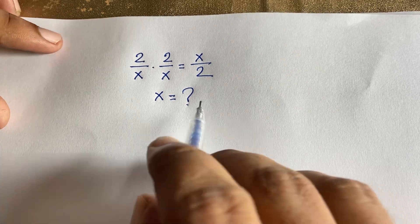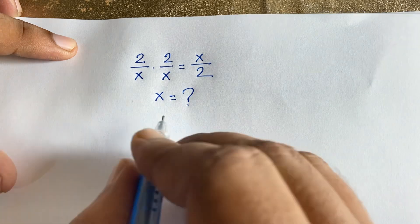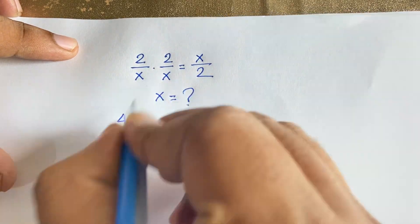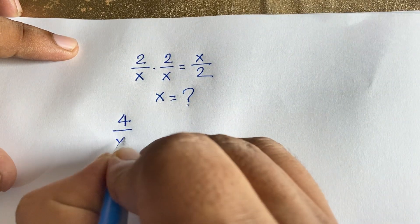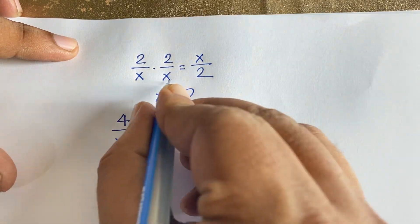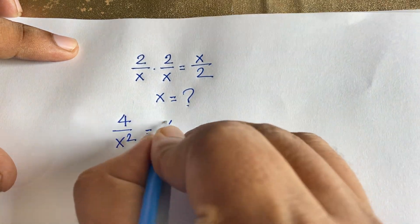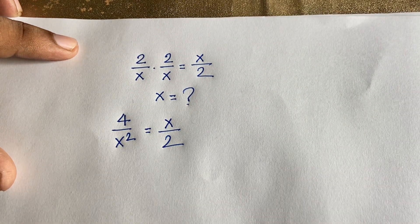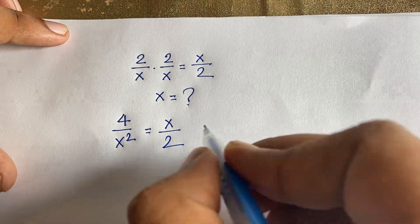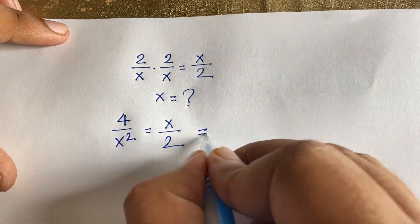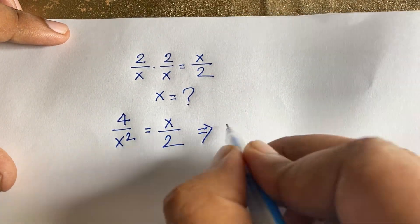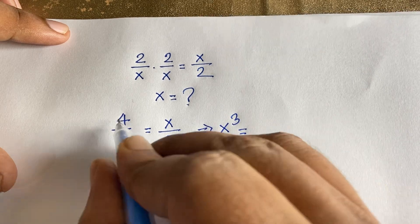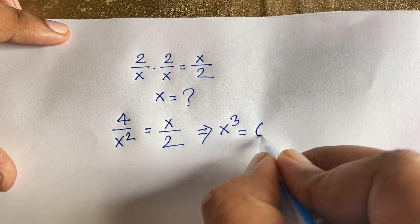Look, here is 2 times 2, it will be 4. And here is x squared, because x times x it will be x squared. And here is x and here is 2. So I consider this expression x times x squared, it will be x to the power 3 is equal to 2 times 4, it will be 8.